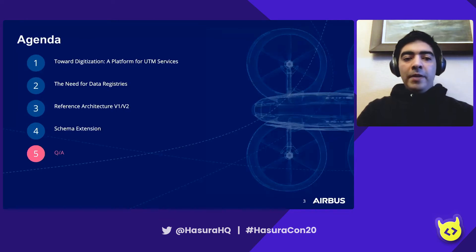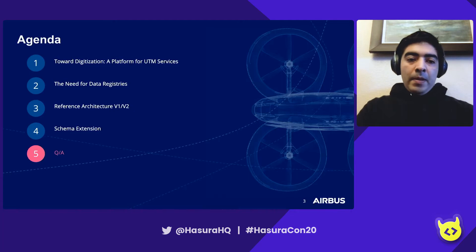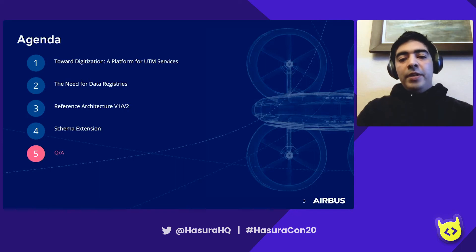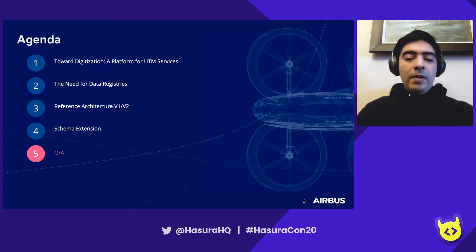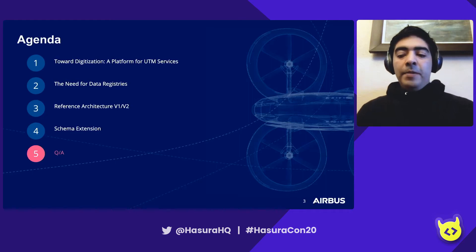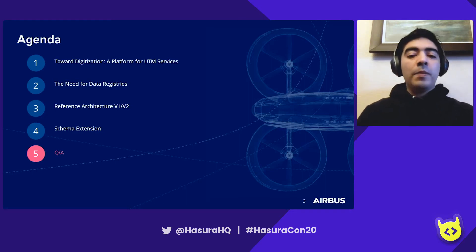A quick overview on what we're going to cover today. We're going to talk about digitization, a platform for UTM services, and why UTM depends on a digital future. We're going to talk about the need for shared data registries — essentially how UTM develops its picture of the world. Then we'll move on to our first iteration, our first crack at building data registries for shared sources, what it looked like before and after Hasura. Then we're going to talk about schema extension and how we use that to implement some more advanced geospatial cases.